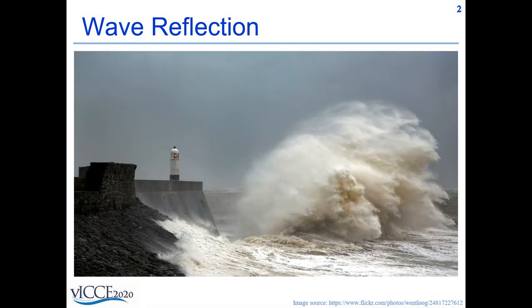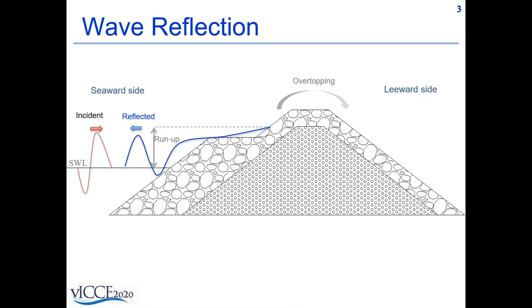The image shows the intensity of wave reflection and how severe it can be especially during a storm. The figure shows the cross-section of a berm breakwater and the major hydraulic performance factors affecting the design such as overtopping, wave reflection, and run-up.